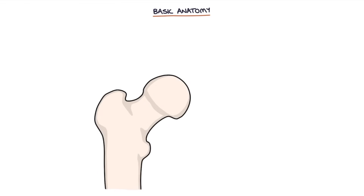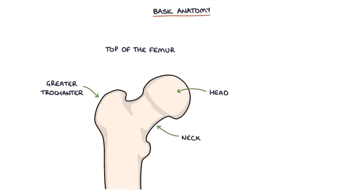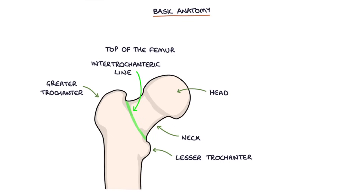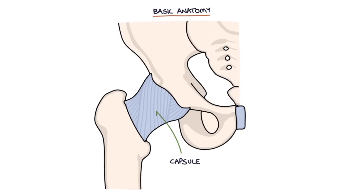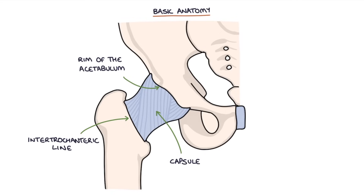There are some basic structures at the top of the femur: the head of the femur, the neck of the femur, the greater trochanter on the lateral side, the lesser trochanter on the medial side, the intertrochanteric line, and the shaft, which is the body of the femur. The capsule of the joint is a strong fibrous structure that attaches to the rim of the acetabulum on the pelvis and to the intertrochanteric line on the femur, surrounding the neck and head of the femur.